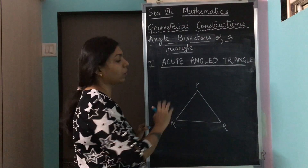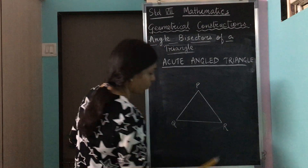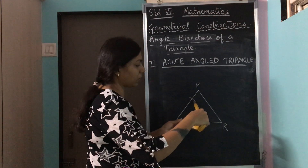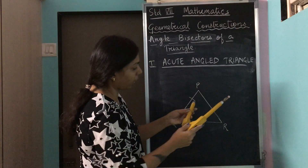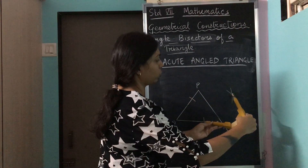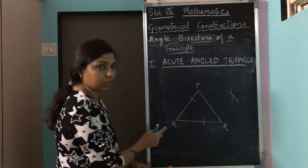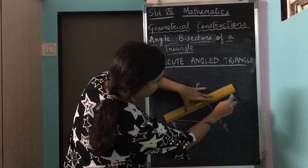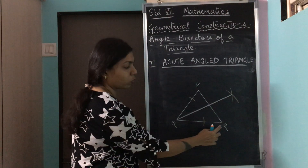We will start with angle Q. I keep my pointer on Q and draw the first arc, then the second arc. Then keeping the compass on these arcs, we get the X mark. We join that X mark with point Q and draw our first angle bisector.